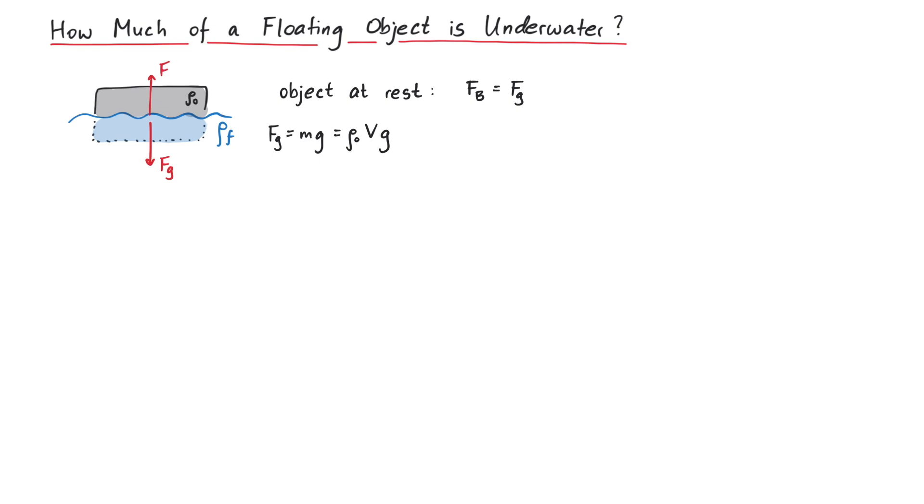The buoyant force is given by MFG, where MF denotes the mass of the fluid that is displaced by the object, so MF is equal to the fluid density rho F times the volume that is underwater.